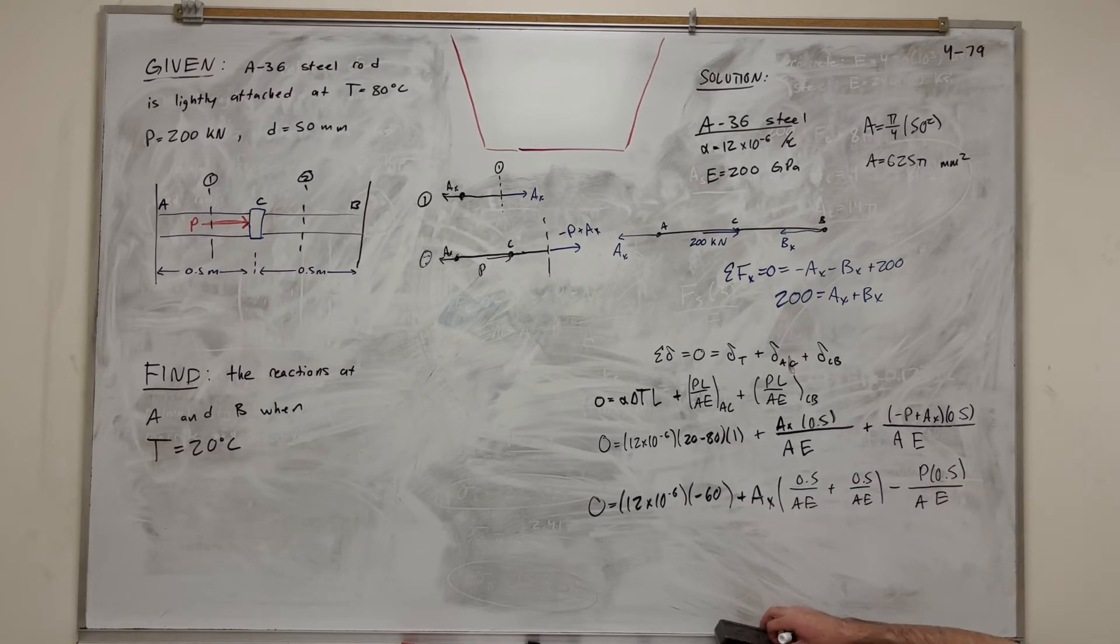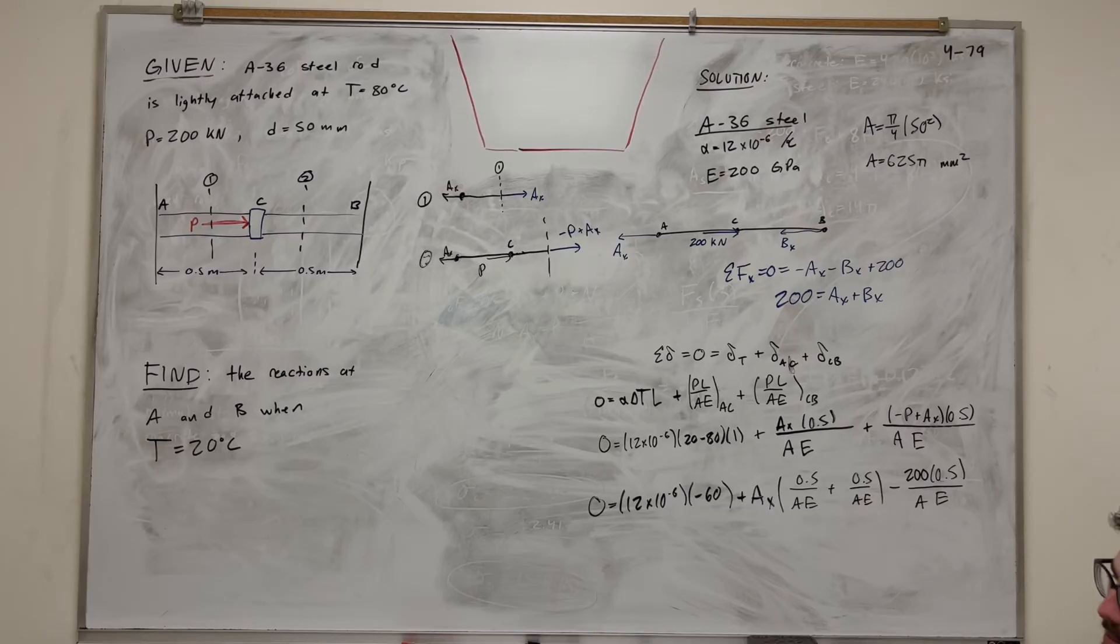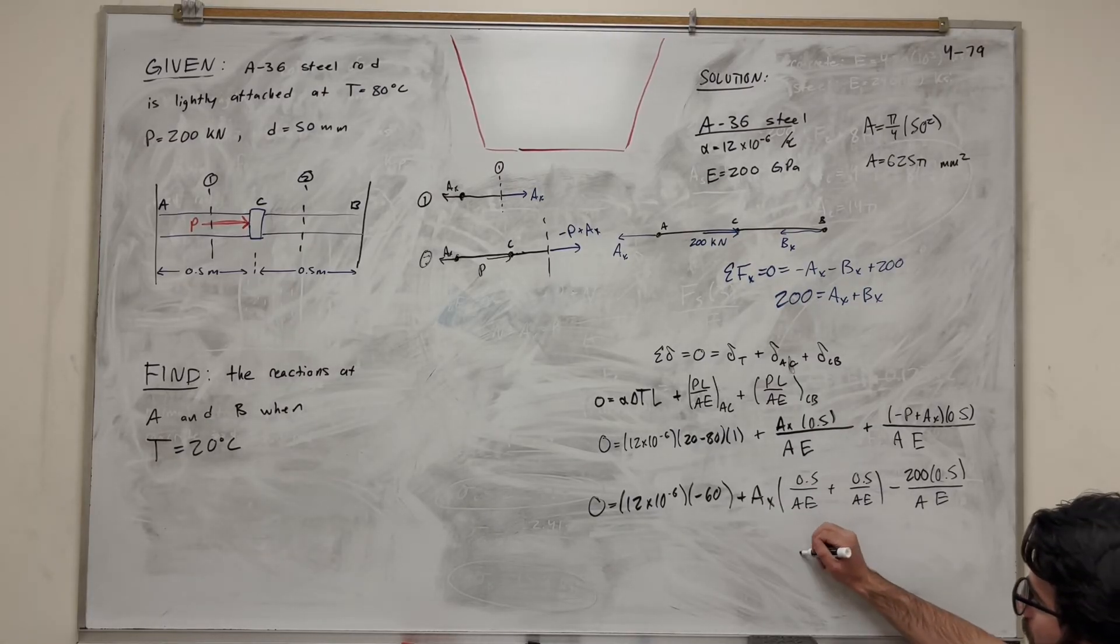Now we know P is 200 kilonewtons. So I'm just going to go ahead and put that 200 there. All right. Nice. So now we have a really simple equation. A is that number. E is that number. We have A_X. That's the only unknown we have. So what we're going to do is we're just going to do the math on this. We're going to do the math on this. Move it to the other side. Divided by this quantity. Pretty easy, right? I hope you guys know how to do this by now.